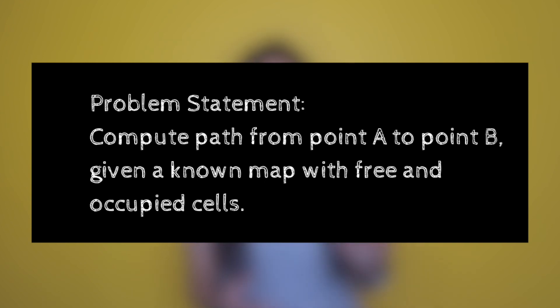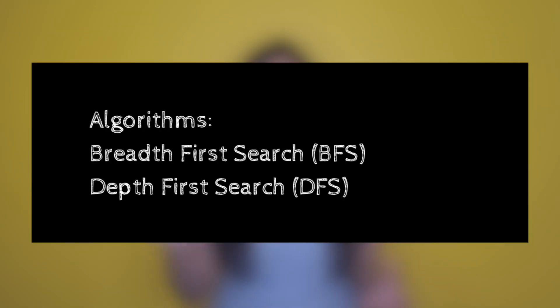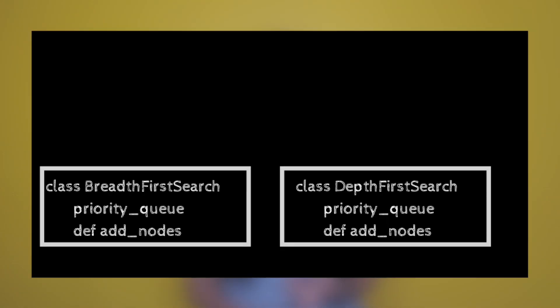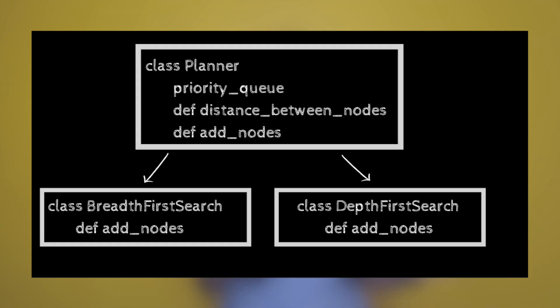For example, if you're computing a path from point A to point B using two different algorithms — breadth-first search and depth-first search — they can both be their own classes. But you'll soon realize there are common components, such as having a priority queue. You might want to create a parent class that brings them together and then have two child classes for the parts where they differ.